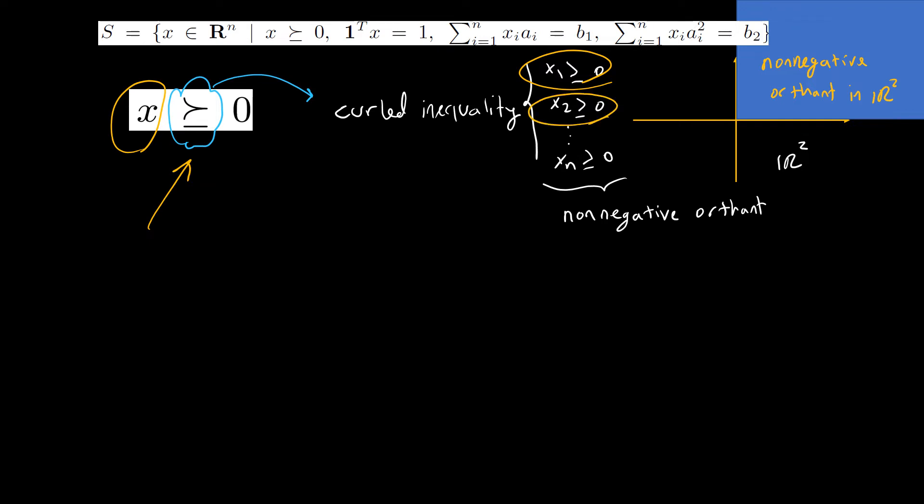This set of inequalities has a special name. We call it the non-negative orthant. In R^2, the non-negative orthant is equivalent to the first quadrant where every component has a non-negative value.